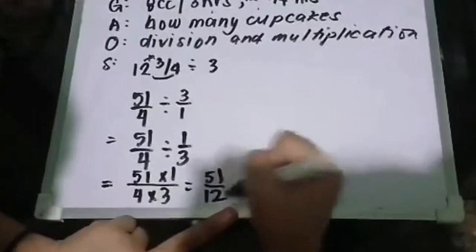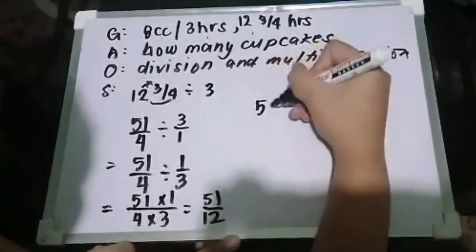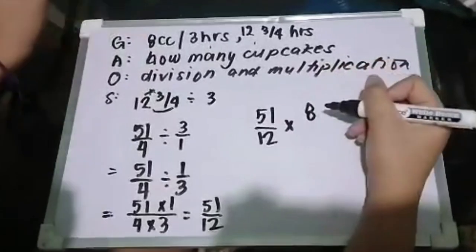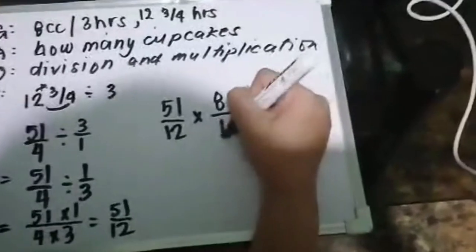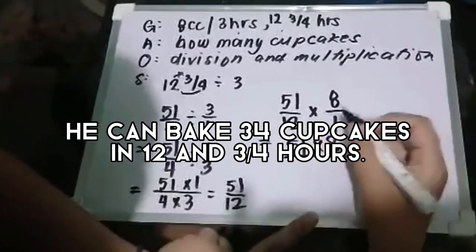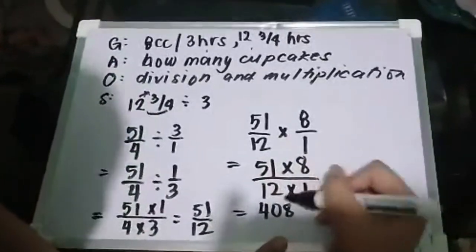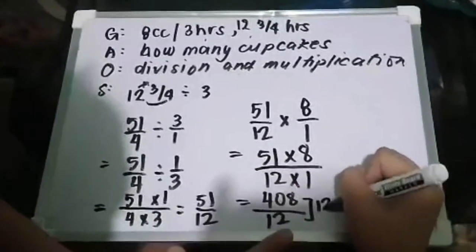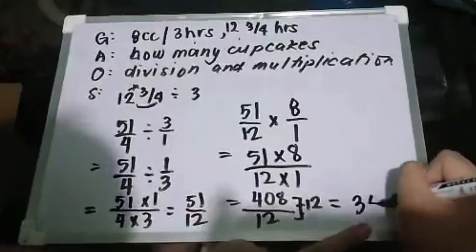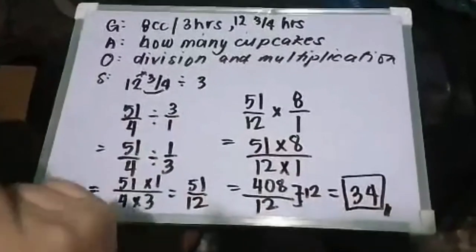Now, this isn't finished yet because the question asks how many cupcakes. Let's proceed to multiplication. 51/12 and multiply it by 8 cupcakes, since that's what he can make per 3 hours. For 8 cupcakes, we put a 1 underneath to make it a fraction: 8/1. Proceed with multiplication: 51 times 8 over 12 times 1. This gives us 408/12. Let's simplify since they have a common factor of 12. 408 divided by 12 equals 34 cupcakes. So the answer is 34 cupcakes can be made if he bakes for 12 and 3/4 hours.